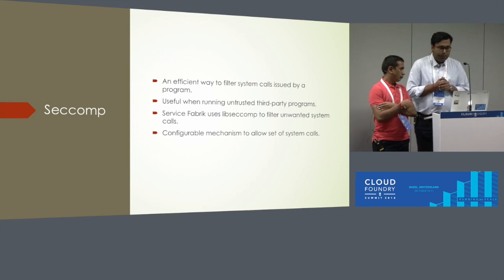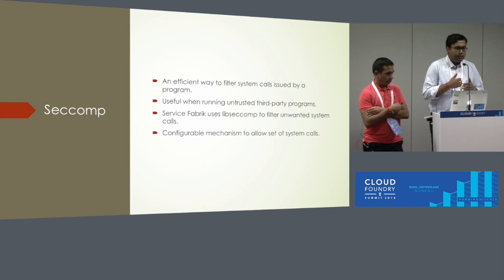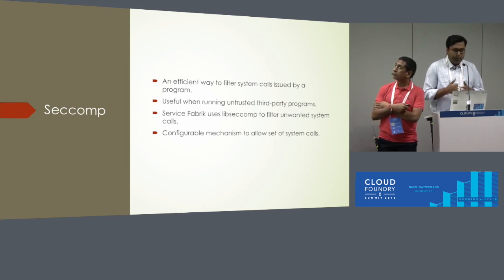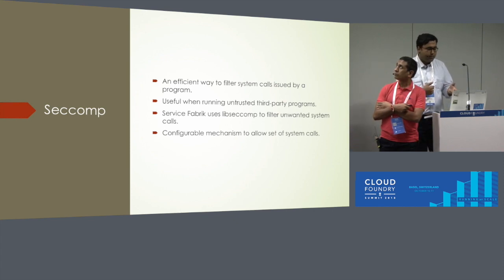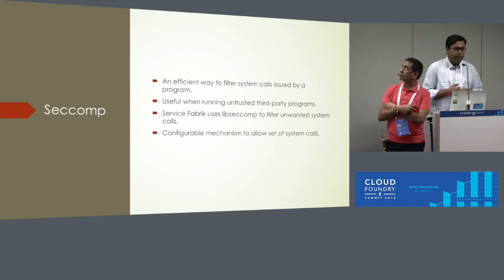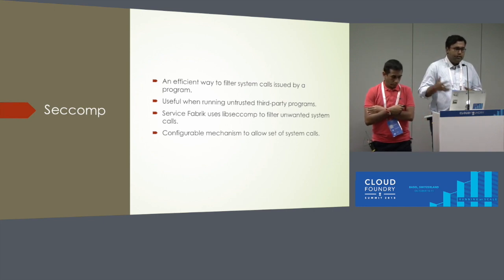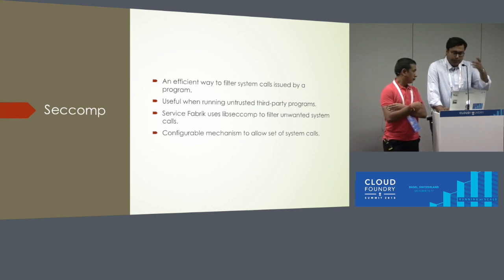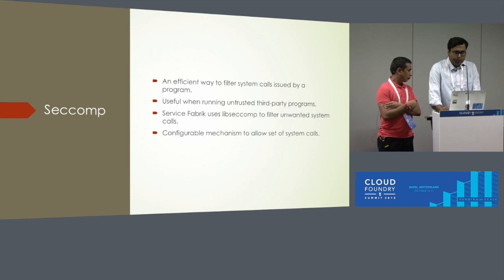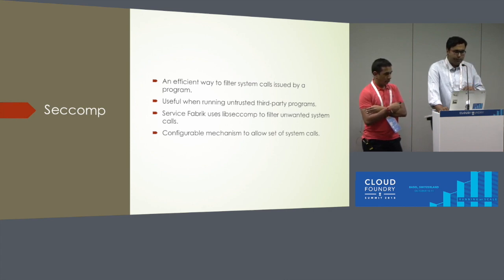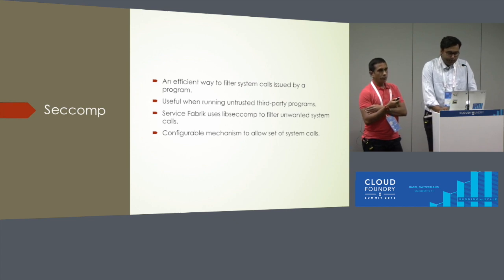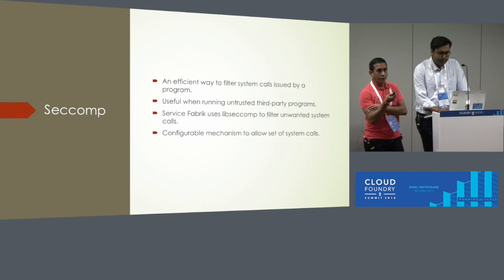Coming back to seccomp — you can actually filter the system calls you want to allow, and this is what we used for our use case. Seccomp is a very efficient way of filtering the list of system calls you want to allow. You just configure it, provide the list of allowed system calls, and others will be denied automatically. It's especially useful when running untrusted third-party programs. We used libseccomp, a C library for filtering unwanted system calls. In Service Fabric we have a configurable mechanism for allowing system calls — our approach is to deny all and then whitelist certain system calls needed for a specific process.